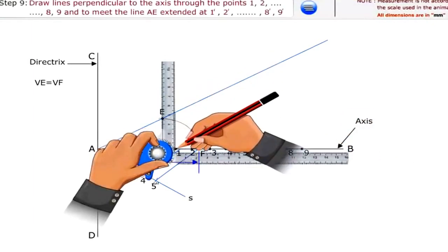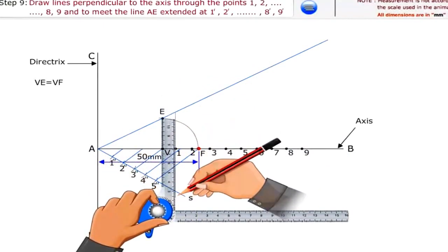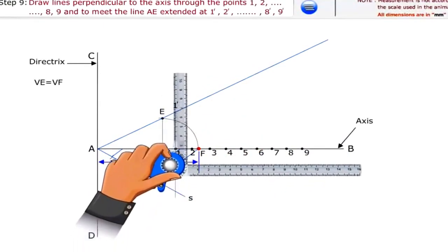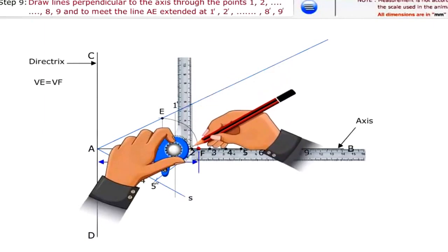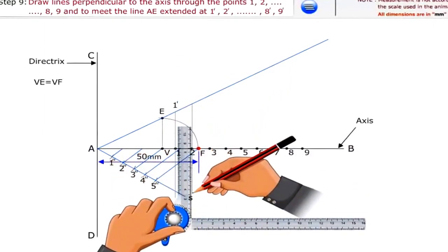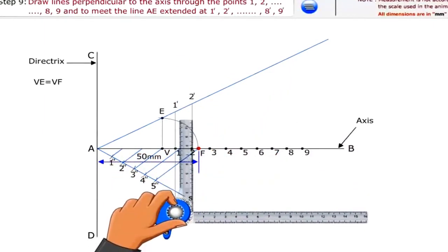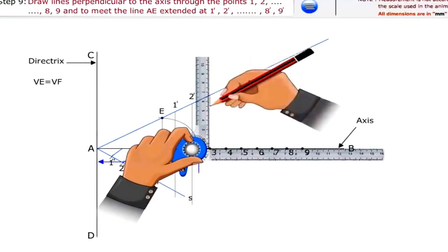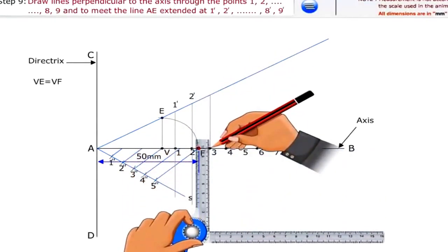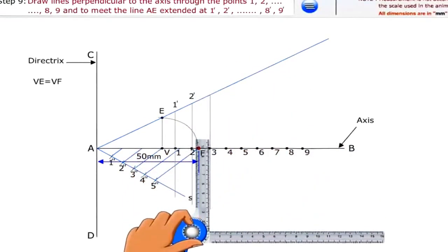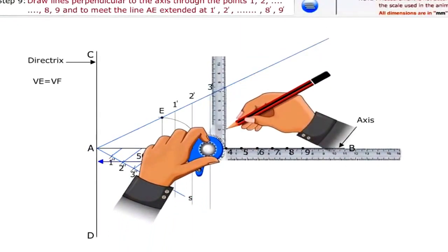Through the points 1, 2, 3, 4, 5, 6, 7, 8 and 9 draw lines perpendicular to the axis to meet the line AE extended at 1', 2', 3', 4', 5', 6', 7', 8', 9'.